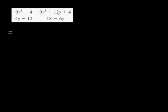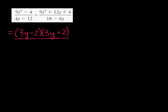In the numerator here we've got a difference of squares, and so that factors to 3y minus 2 times 3y plus 2. Over, we can common factor this denominator — we've got 4 times y minus 3. Now here we're going to multiply by the reciprocal, so I can common factor in the denominator here. I've got a 6 in common, and I'm left with 3 minus y.